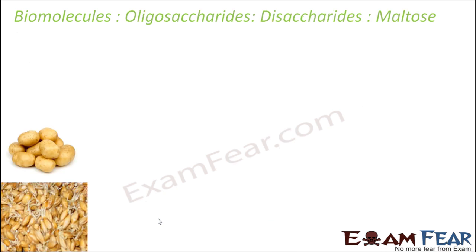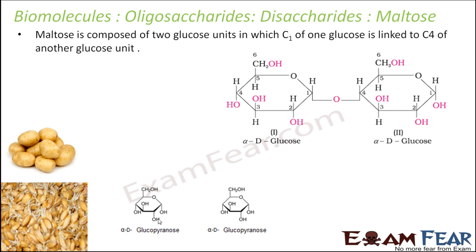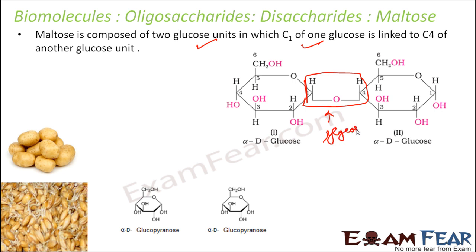Maltose is composed of two glucose units in which C1 of one glucose is linked to C4 of another glucose by a glycosidic bond. This is an example of a disaccharide made up of two similar monosaccharides, so on hydrolysis of maltose you get two similar units.